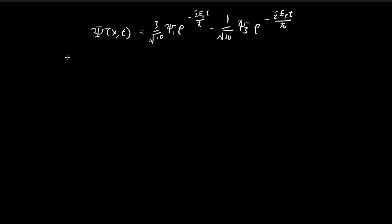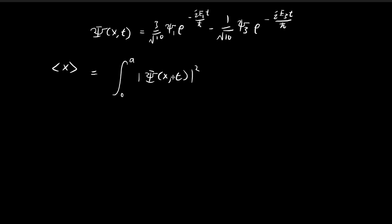Our goal in this video is to find the expected value of x for such a wave function. We found in the last video that the wave function looks something like this. So in order to find the expected value of x, we're going to have to evaluate this integral. We need to take the absolute value square of the wave function — this is the probability density function of position x at time t — multiply by x, and integrate dx.